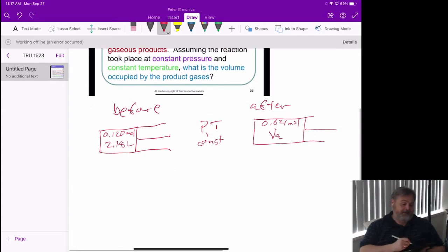This is, again, the idea of Avogadro's law. The number of moles before and the volume before, well, that's going to be some sort of constant because the pressure and temperature is constant. So that has to equal the number of moles after and the volume after.